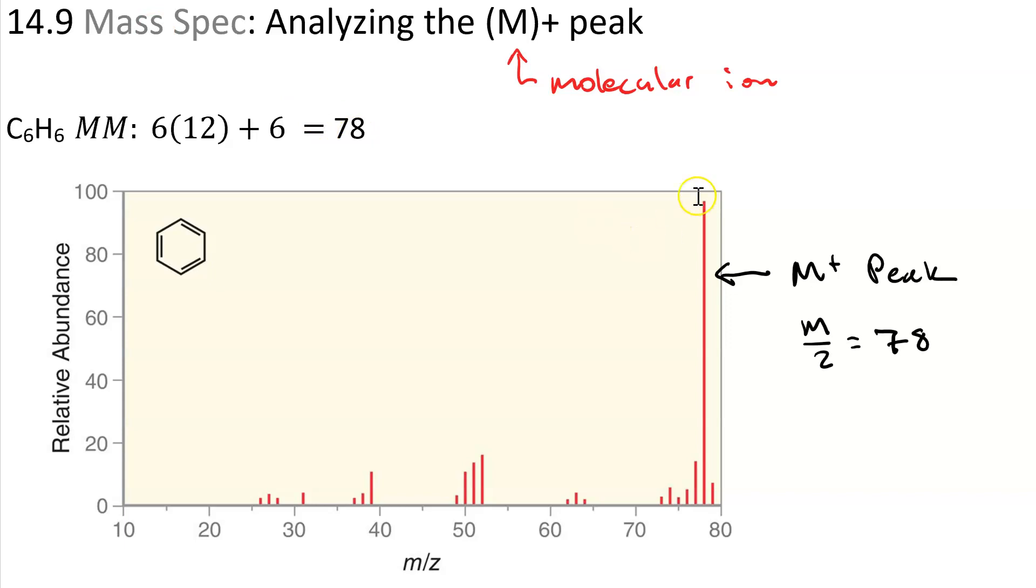Notice that the molecular ion peak for benzene is also the base peak, that is the most abundant fragment. That's because benzene, being aromatic, having conjugated pi bonds in the ring, is very much stabilized by resonance and doesn't fragment very much.